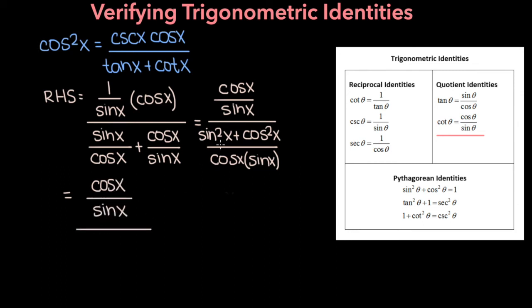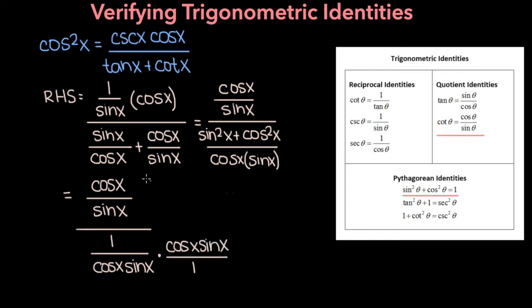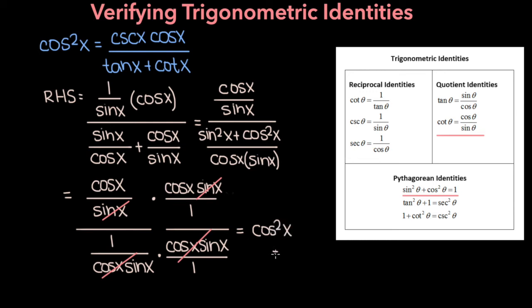In the denominator we have sine squared x plus cosine squared x which, based on this identity, is 1, divided by cosine x times sine x. Now we can multiply the denominator by its reciprocal, times cosine x sine x over 1, and we do the same to the numerator. The cosine x sine x terms cancel, and then sine x and sine x in the numerator cancel, leaving us with cosine x times cosine x which is cosine squared x — the left-hand side of our equation. So we verified this trig identity.